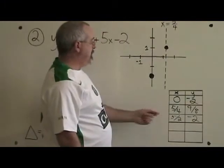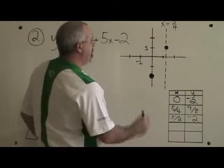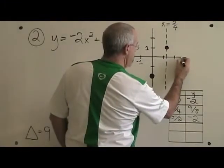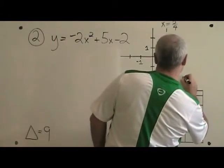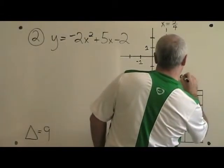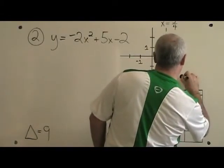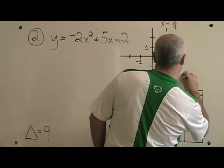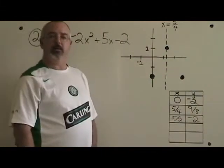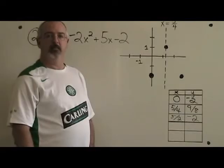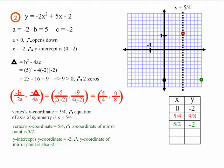This is in the table — let's get it on the graph. 5 halves is here, negative 2 is here. This is how you find the point symmetrical to the y-intercept. This is what example two looks like after we find our mirror point.